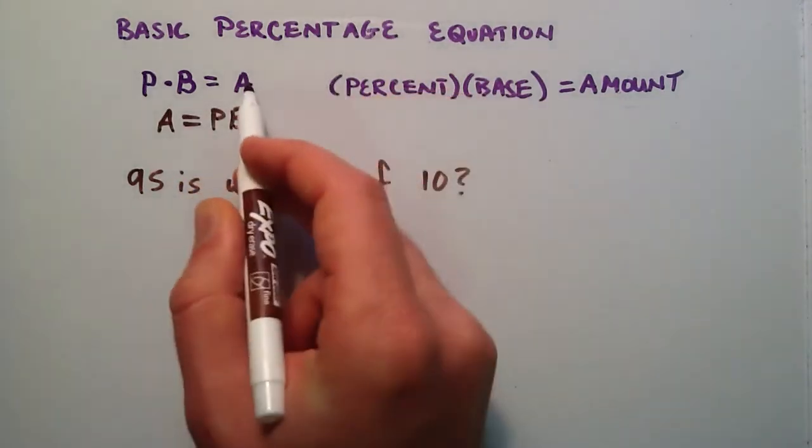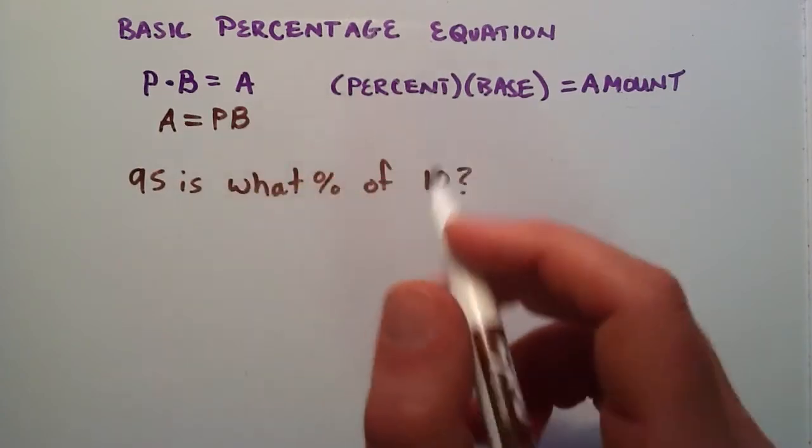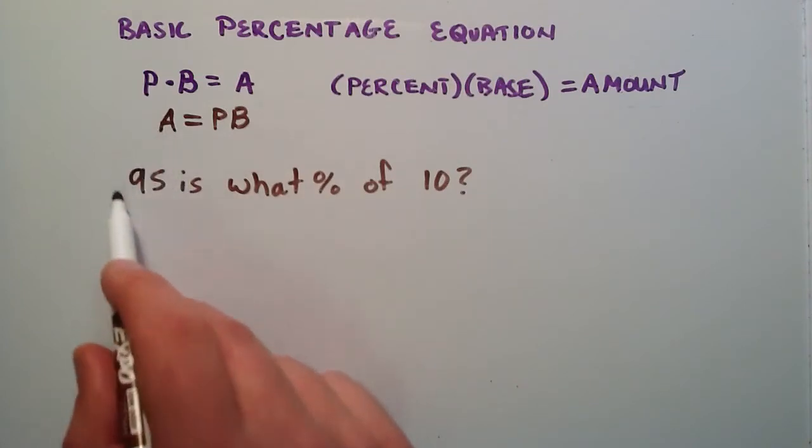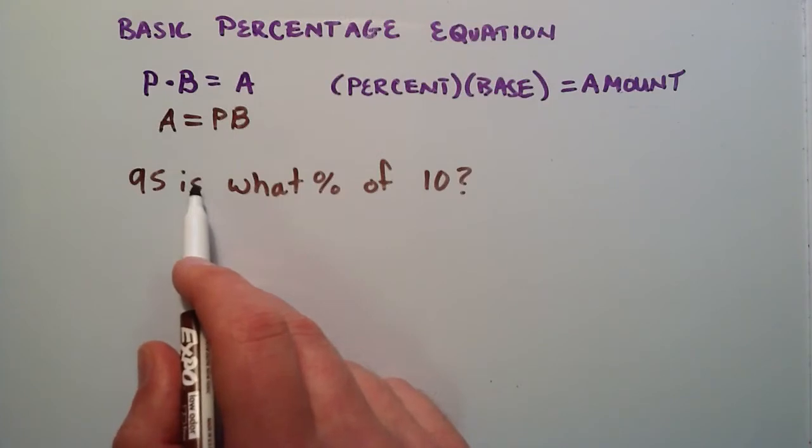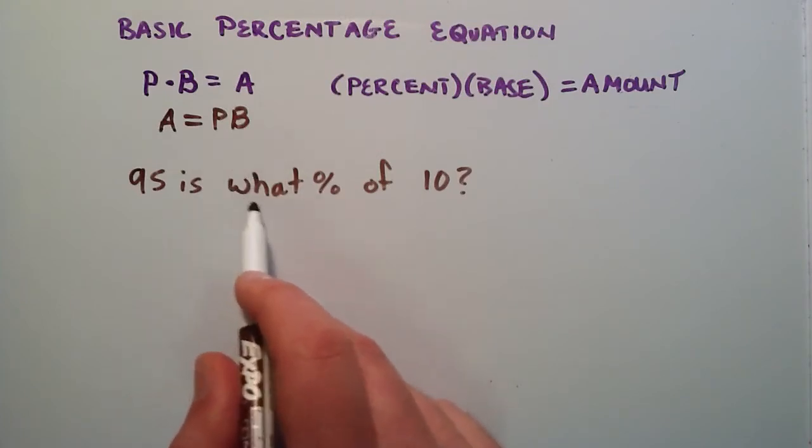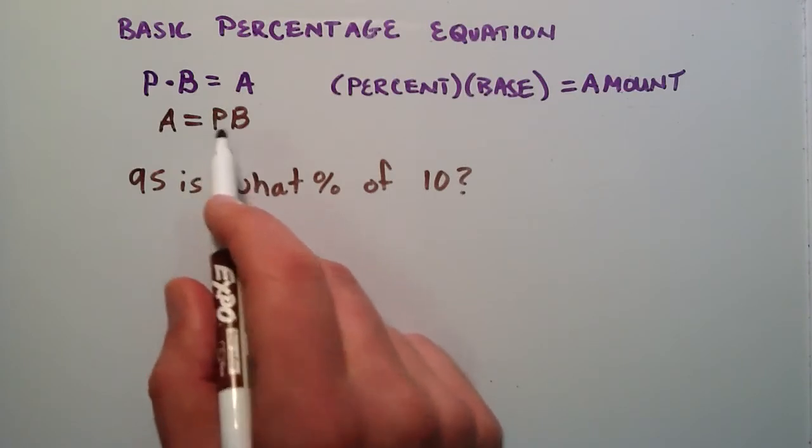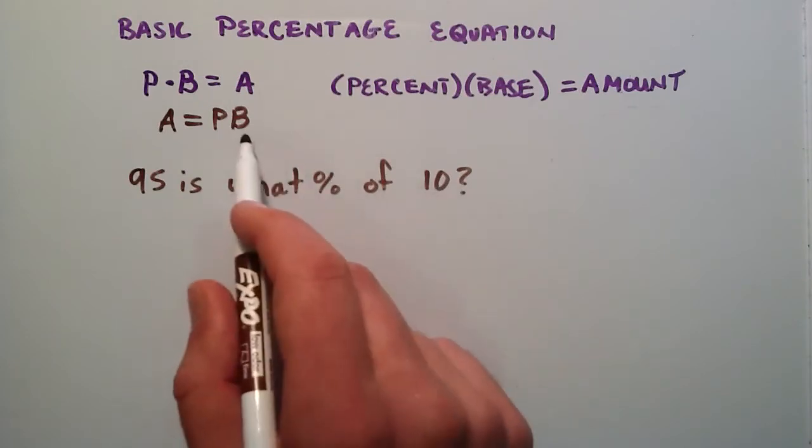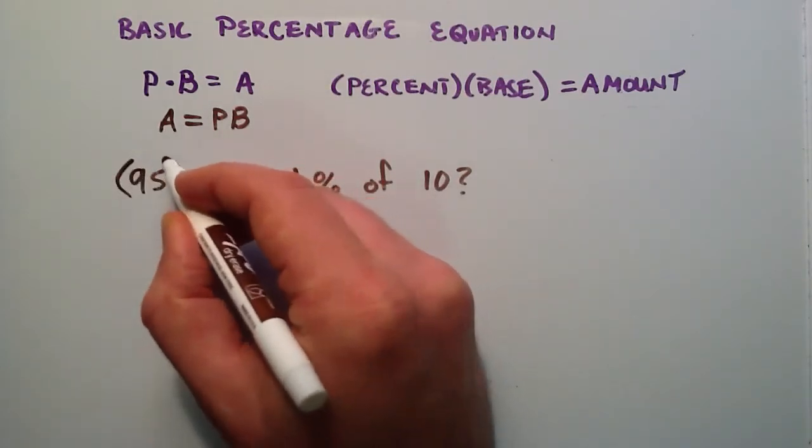We're just flipping A to the left side and P and B to the right side. Basically what we're saying is we have an amount. In this case it's 95. Is and equals are really the same thing. The what percent is basically the right hand side, the P. What percent, that's our P, of some base, B.